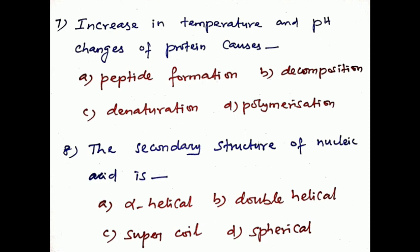Question number 7: Increase in temperature and pH changes of protein causes? That is a chemical change. Option A: Peptide formation. Option B: Decomposition. Option C: Denaturation. Option D: Polymerization. So option C, Denaturation, is the correct answer. Question number 8: The secondary structure of nucleic acid is? Option A: Alpha helical. Option B: Double helical. Option C: Super coil. Option D: Spherical. The secondary structure of nucleic acid is double helical structure. Option B. Thank you friends.